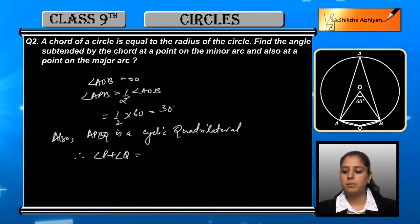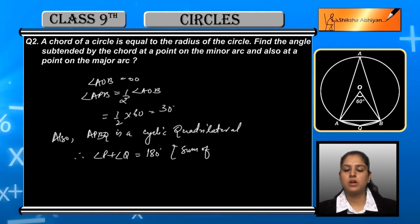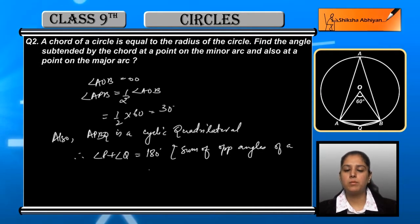And angle P plus angle Q is equal to 180 degrees, so angle Q is equal to 180 degrees. P and Q are opposite angles of this cyclic quadrilateral, so their sum is equal to 180 degrees.